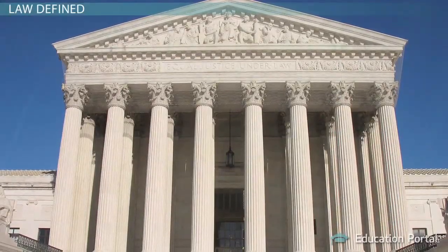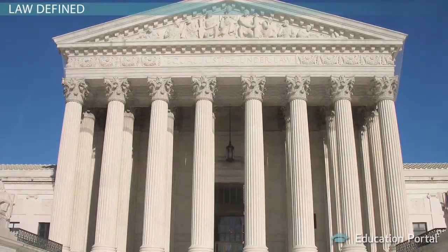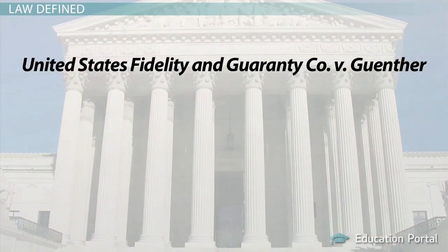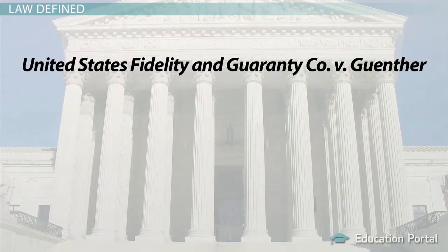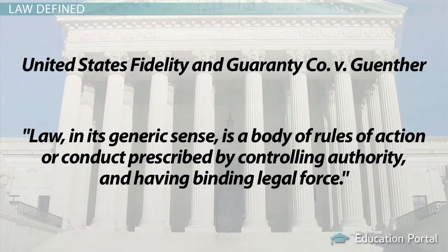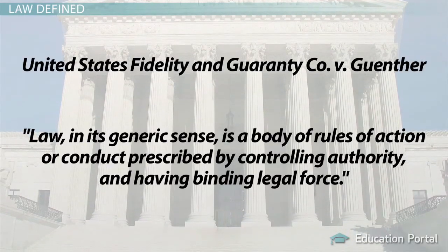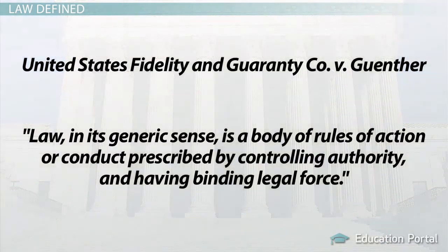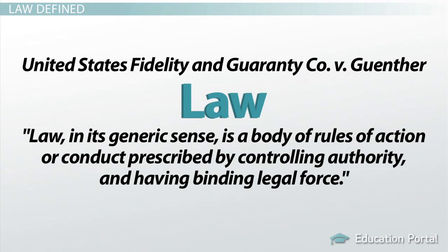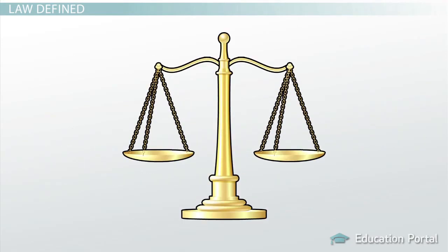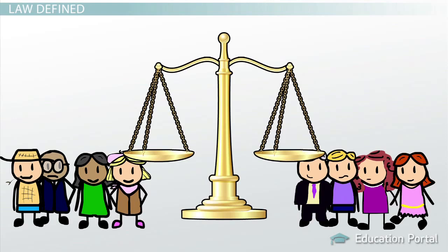The United States Supreme Court plays the final controlling role in defining legal terms. Through the case of United States Fidelity and Guarantee Company v. Gunther, the Supreme Court states that law, in its generic sense, is a body of rules of action or conduct prescribed by controlling authority and having binding legal force. This is a reliable and thorough definition of the law, but there are many accepted definitions for what constitutes law.